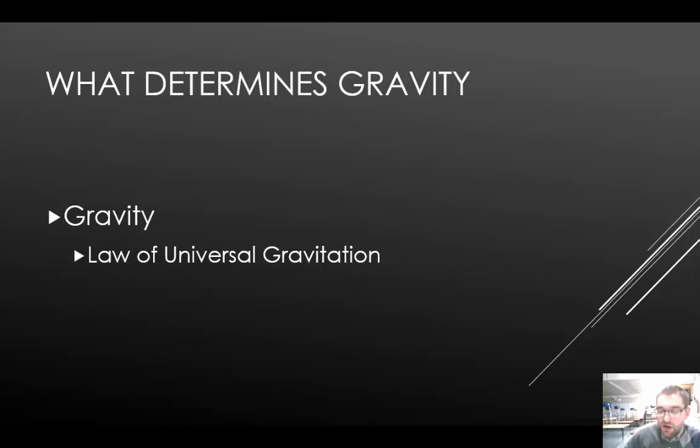Gravity attracts all objects towards each other. Newton's law of universal gravitation states that every object in the universe attracts every other object. The strength of the force of gravity between two objects depends on two factors: the mass of the objects and the distance between them.